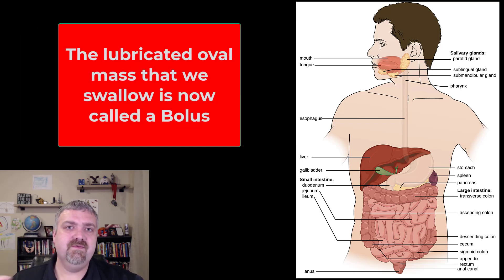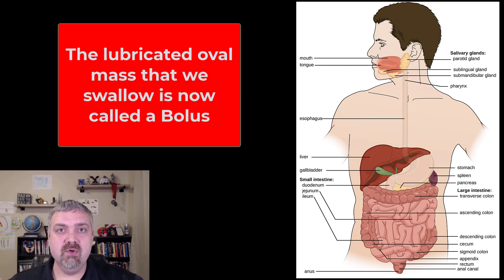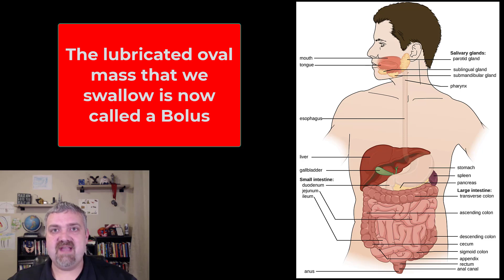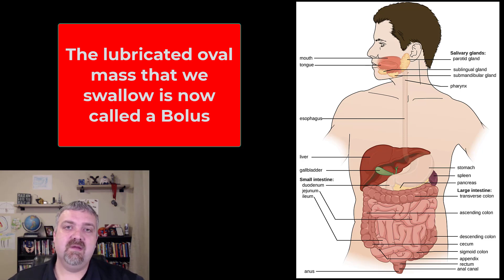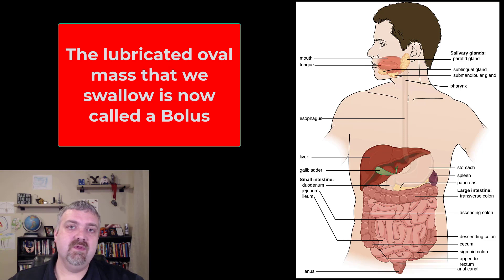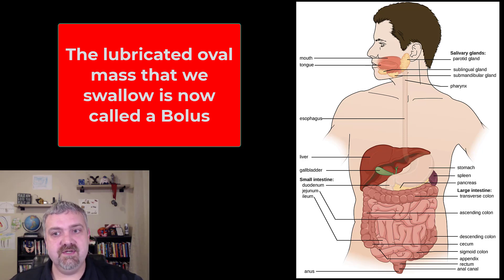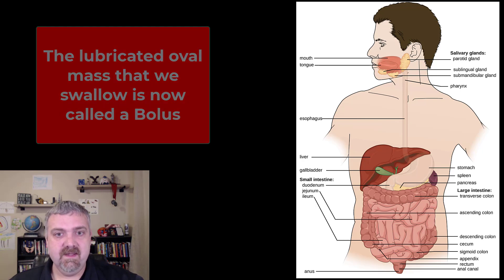As we swallow food, it's now going to be called a bolus. Once you've chewed it up into this mashed, lubricated mass, it's called a bolus. This bolus of food is swallowed from your oral cavity to your pharynx, through your esophagus, and into your stomach.